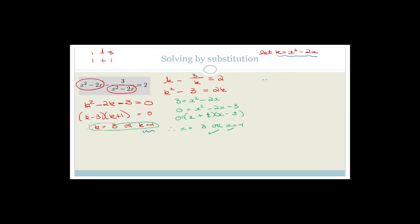If k equals negative 1, then negative 1 equals x squared minus 2x, so 0 equals x squared minus 2x plus 1. The coefficients of x squared are 1 and 1, both signs are minus, and the factors of 1 are just 1 and 1. So x equals 1 or x equals 1. We have four solutions total — which makes sense because when we multiplied out we ended up with x to the 4.